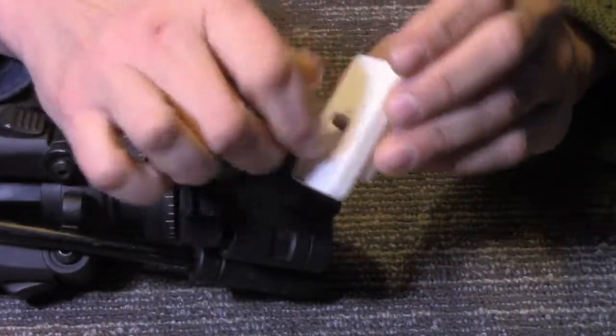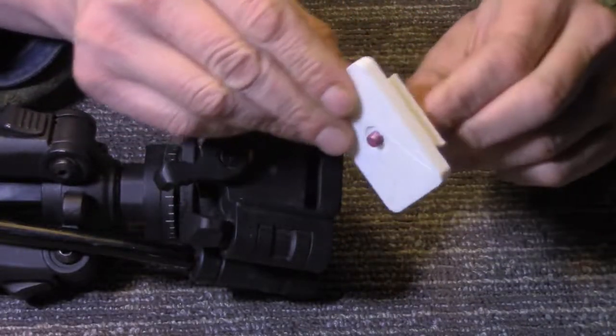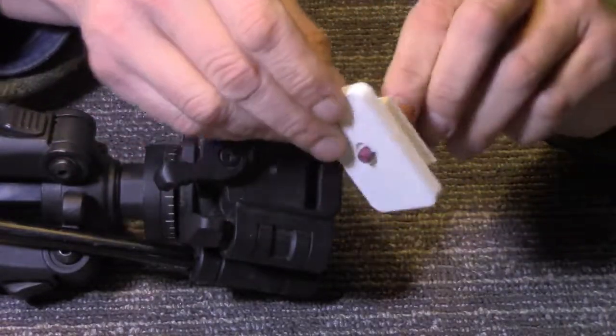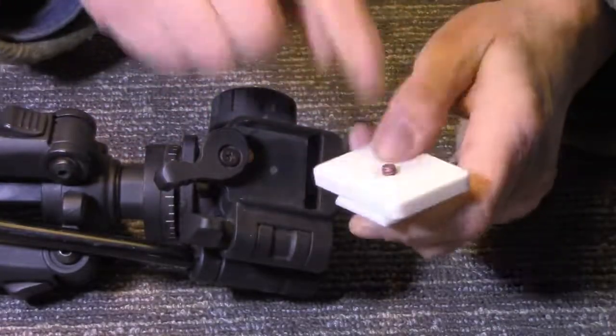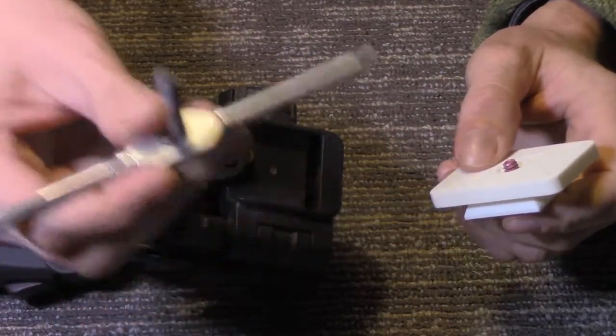Also, on the hole for the mount, and this is a quarter inch by 20 thread screw. What I did is I made the hole just a little small enough so that you can take and thread it.